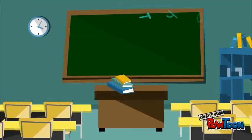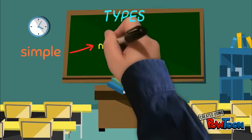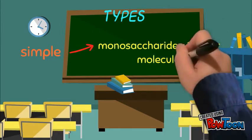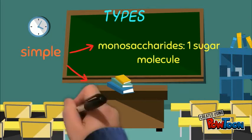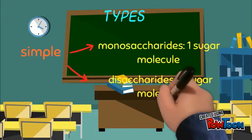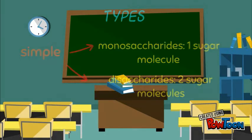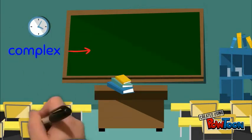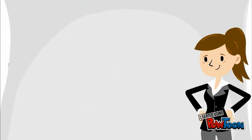Types of carbohydrates: Monosaccharides — one sugar molecule, with a chain or ring configuration. Disaccharides — two sugar molecules, forming pairs of rings. Polysaccharides — more than 2 sugar molecules, with many rings linked together. They are composed of monosaccharides.